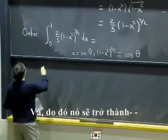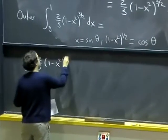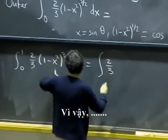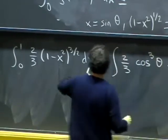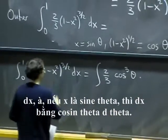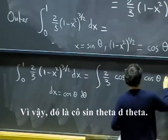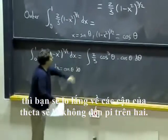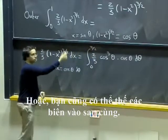And so that will become, so two-thirds remains two-thirds. One minus x squared to the three halves becomes cosine cubed theta. Dx, well, if x is sine theta then dx is cosine theta d theta. So that's cosine theta d theta. And, well, if you do things, substitutions the way I do them, then you should worry about the bounds for theta, which will be zero to pi over two. Or you can also just plug in the bounds at the end.